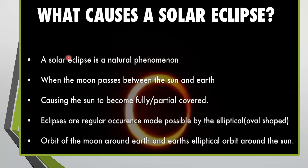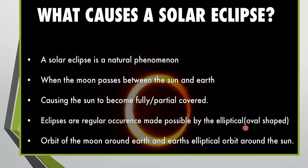Now students, what are the causes of a solar eclipse? A solar eclipse is a natural phenomenon. When the moon passes between the sun and the earth, it causes a solar eclipse, causing the sun to become fully or partially covered. Eclipses are a regular occurrence made possible by the elliptical — means oval — shape of the moon's orbit around the earth and earth's elliptical orbit around the sun.